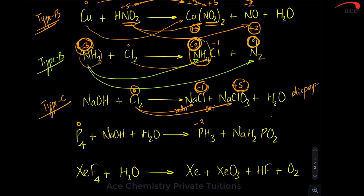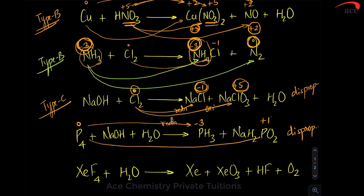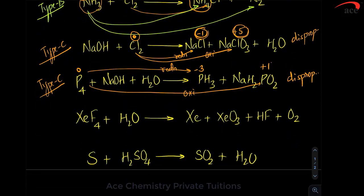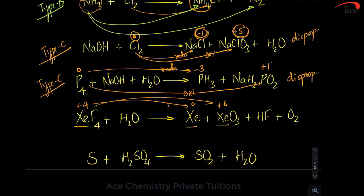In Type C, the oxidation states end up as two different values and they are not the same as the starting value. Phosphorus starts at 0 and goes to −1 in one place and +1 in another — an example of disproportionation. For xenon: it starts at +4, goes to 0 in one place and +6 in another. Plus 4 going to 0 and plus 4 going to +6 — the same element undergoing two different changes. At one place it is getting reduced, at the other it is getting oxidized. Such a reaction is disproportionation, Type C.